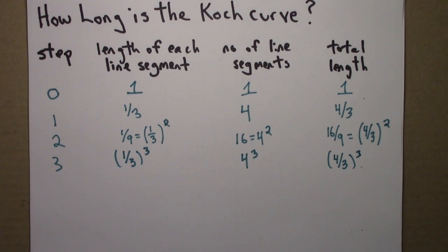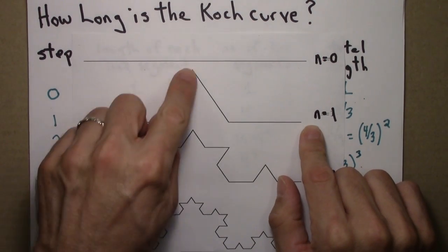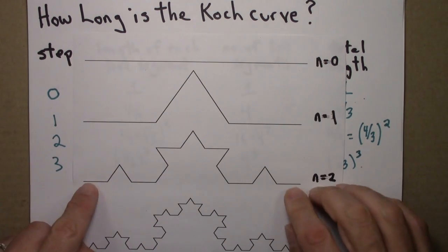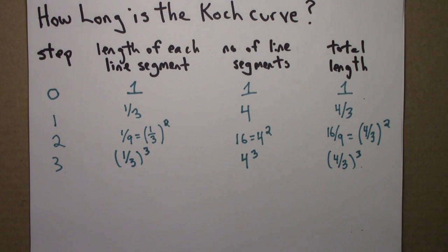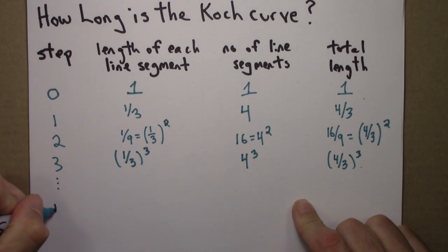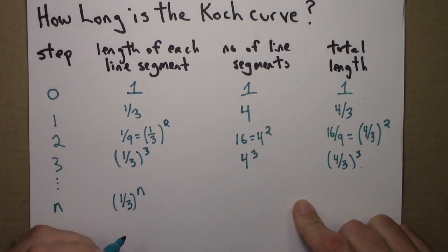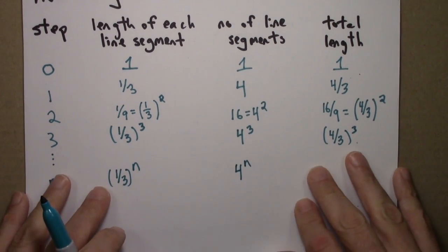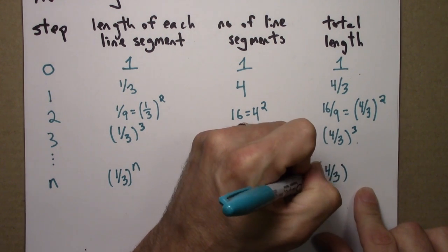Notice that the length is getting longer — and that's easy to see. The original path has length one, and then I've added a detour, so clearly the path with a bend in it is longer. Every time I add a bend, I'm adding length. We can generalize this pattern: at the nth step, each line segment has been cut in thirds n times, and the number of segments is multiplied by four at every step, so the total length is four-thirds to the n.